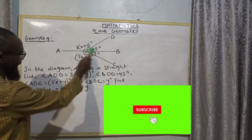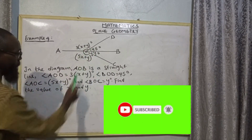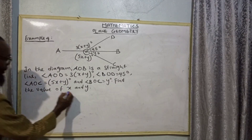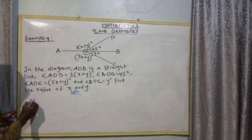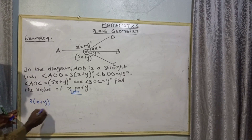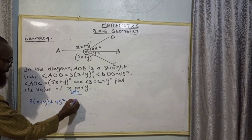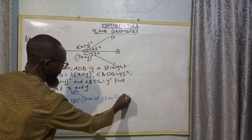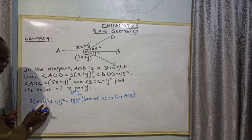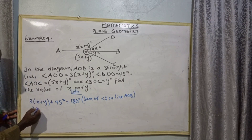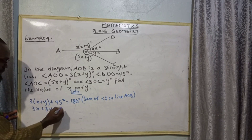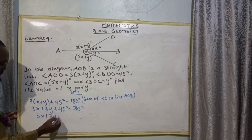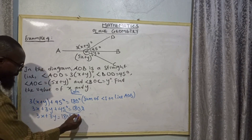Since angle AOB is a straight line, the two angles on each side form angles on a straight line. So we can say that 3(x + y) + 45 = 180 degrees. The reason: sum of angles on line AOB, on a straight line. When we expand the bracket we have 3x + 3y + 45 = 180 degrees.